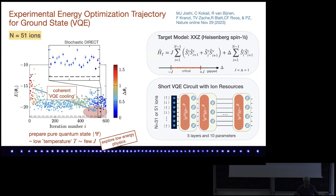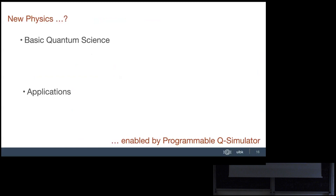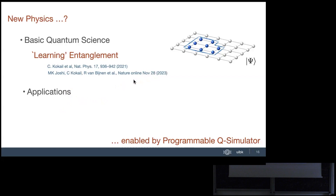So we're able to prepare approximate ground states in the sense of a few low-lying states. Now the question is: can we use these tools to do something interesting? On the basic quantum science side, we're interested in learning entanglement. There's a theory paper laying out the protocol and an experiment from last year. There are also applications to quantum metrology — using the same variational tool set to optimize Ramsey interferometers for atomic clocks — but I'll focus on the entanglement learning part.